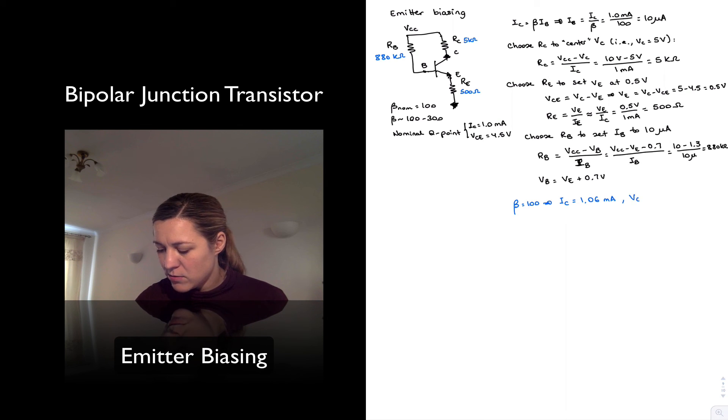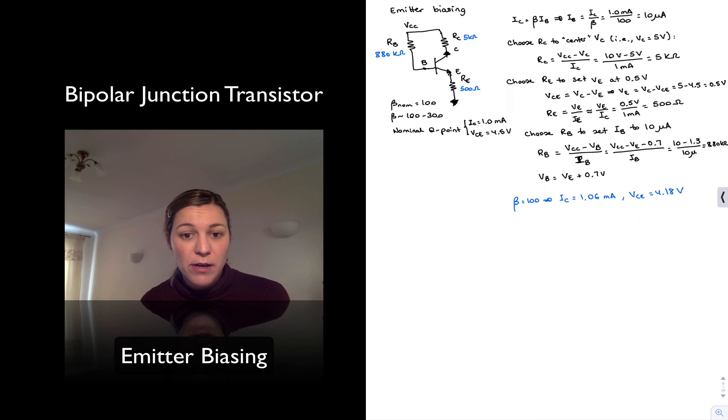And VCE was equal to 4.18 volts. Again, very close to the 4.5. Not surprising since we assume beta equals 100 in order to do our calculations.